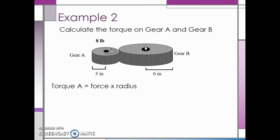The torque on gear A is equal to the force applied multiplied by the radius. The force applied is 8 pounds, and this time the radius is 0.25 feet. Don't forget to convert your inches into feet. Therefore, the torque on gear A is 2 foot pounds.